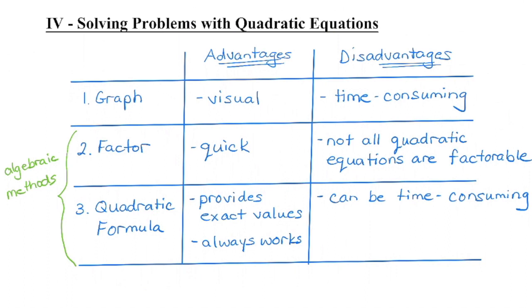There are advantages and disadvantages to each method. If the question specifies that you must do it algebraically, be aware graphing is not an algebraic method. You can either factor or use the quadratic formula — those are your algebraic methods.